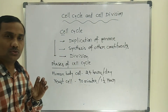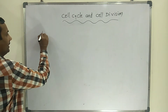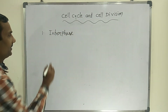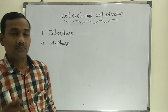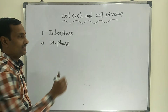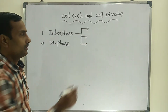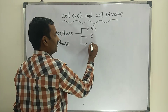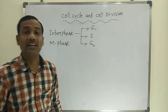There are mainly two phases in the cell cycle. The first phase is interphase, and the second phase is M phase. Interphase is again divided into three sub-phases: G1, S phase, and G2. These are the three major sub-phases of interphase.